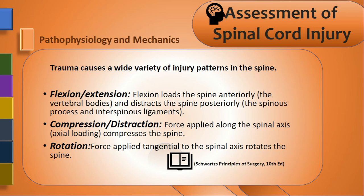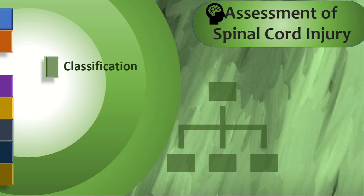Trauma causes variable injury patterns in the spine. Mechanisms include flexion or extension, compression or distraction, and rotation — a combined force. Flexion loads the spine anteriorly toward the vertebral bodies, while distraction forces the spine posteriorly, stressing posterior ligaments. Compression applies force along the spinal axis — axial loading from head to toe. Rotation applies force tangential to the spinal axis, rotating the spine beyond its normal range, leading to injury.